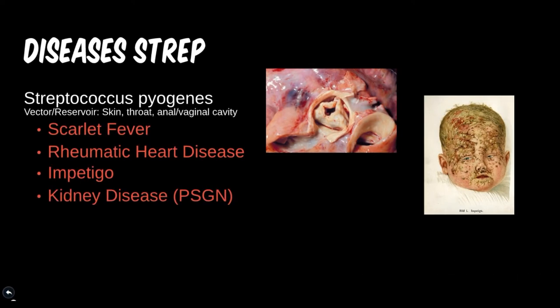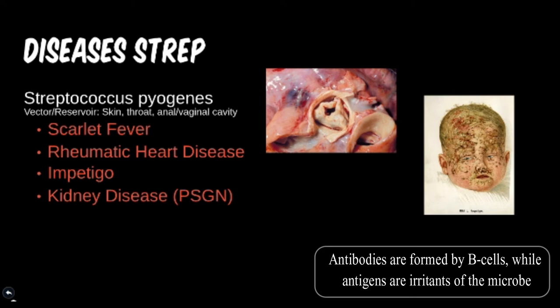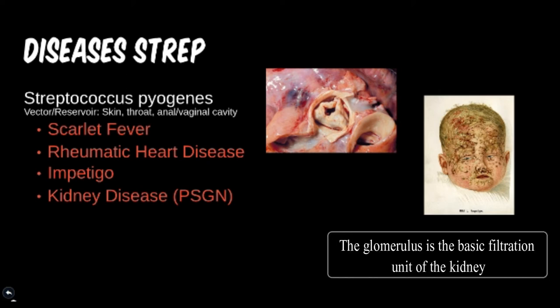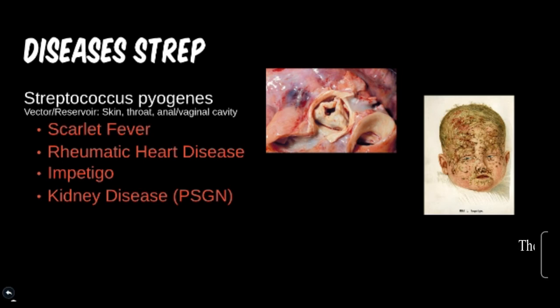Kidney disease can also be caused by Strep pyogenes — in particular, post-streptococcal glomerulonephritis, or PSGN. Like rheumatic heart disease, PSGN is caused by a hypersensitivity reaction, but this time it is a type 3 hypersensitivity. The mechanism involves antibody-antigen complexes being formed and deposited into the tissue. When these complexes are being filtered out of the blood, they stick to the renal tissue and damage the glomerulus, causing nephritis. Unlike rheumatic heart disease, PSGN is not prevented by prophylactic antibiotic treatment.